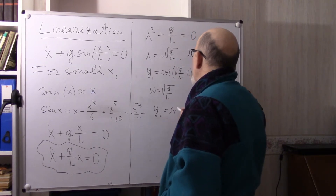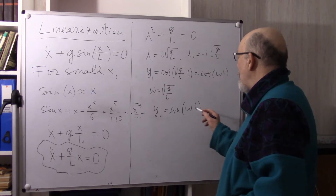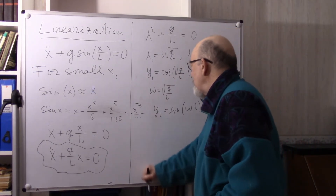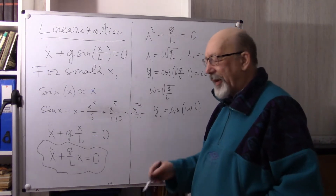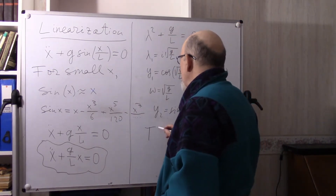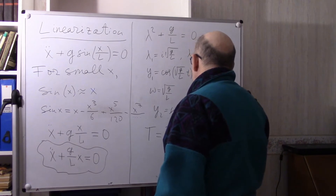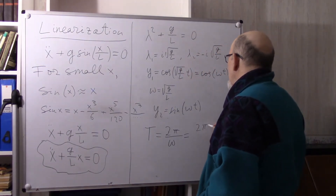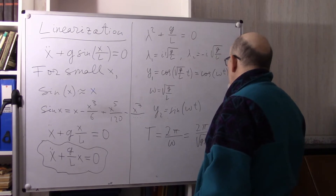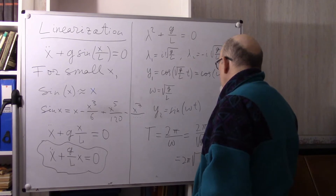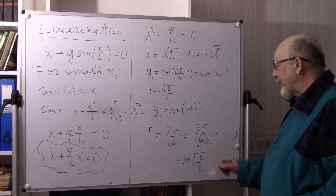Omega is the angular frequency. The period T equals 2 pi divided by omega, which equals 2 pi divided by the square root of G/L. We see that the period grows as the square root of the length of the pendulum.